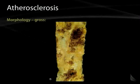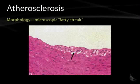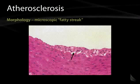On gross morphology, you can see the diffuse, complicated lesions in this aorta from autopsy illustrating atherosclerosis. Here is a microscopic view where you see the fatty streak laid down on the lumen of the vessel, which will develop into a more complicated plaque over time. These fatty streaks are something that can be laid down very early in life.